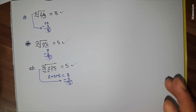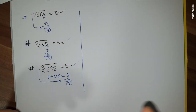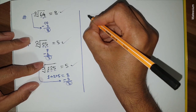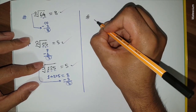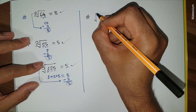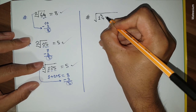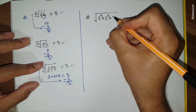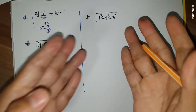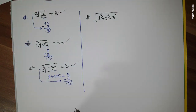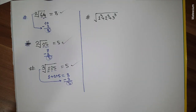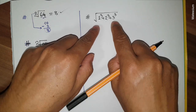I have another math trick that will amaze you. Let's say: √(1³ + 2³ + 3³). What's the answer of this equation? Can you find it within one second? I'm sure you can, if you know the right trick.